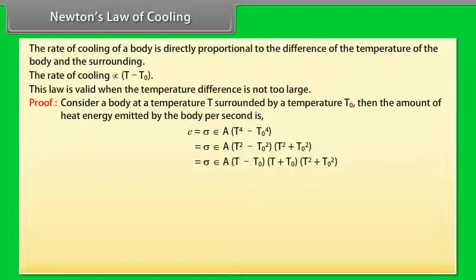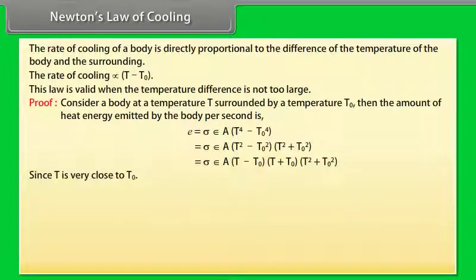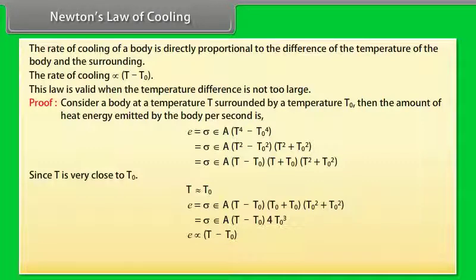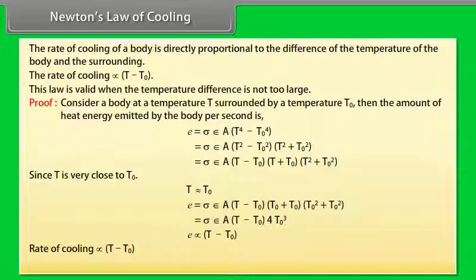E = σεA(T − T₀)(T + T₀)(T² + T₀²). Since T is very close to T₀, it follows that E ∝ (T − T₀), and therefore the rate of cooling is directly proportional to (T − T₀). This proves Newton's Law of Cooling.